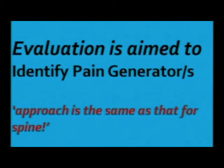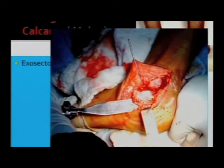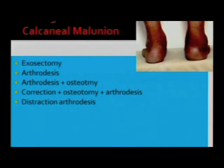Once you have labeled the pain generators, you must address treatment to every one of them. Management options include exosectomy — removing the bump and making the calcaneum parallel to the talus — arthrodesis of the subtalar joint, sometimes arthrodesis plus osteotomy and correction, and sometimes distraction arthrodesis to raise the heel height.